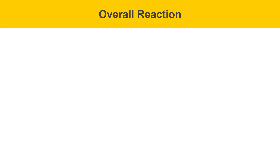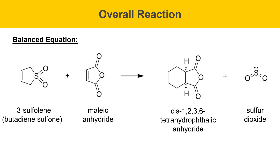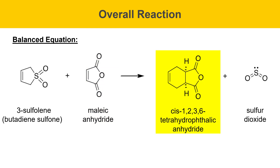Here's the overall reaction for today's experiment. The balanced equation consists of a molecule called 3-sulfalene, also known as butadiene sulfone, reacting with maleic anhydride to give the product cis-1,2,3,6-tetrahydrophthalic anhydride, and the other product is sulfur dioxide. One interesting thing is that there's no diene listed in this particular balanced equation — the 3-sulfalene is going to produce the diene in situ.